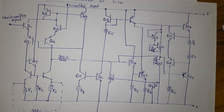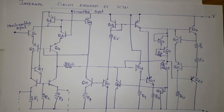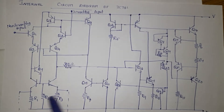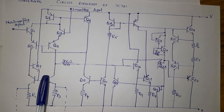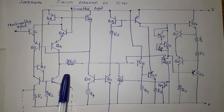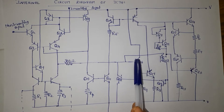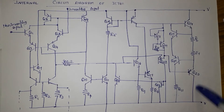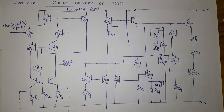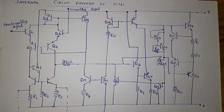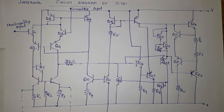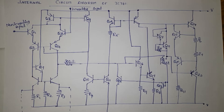The first stage is the input stage, combined with the intermediate stage as the second stage. The third stage is the level shifting stage, and the final stage is the output stage. So there are 4 different types of stages: input stage, intermediate stage, level shift or buffer stage, and output stage. We are going to briefly discuss about the structure of IC741.